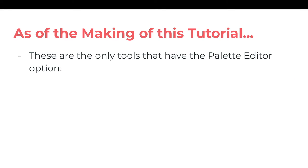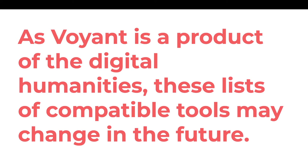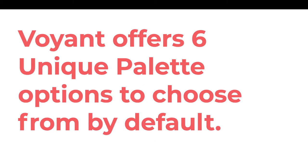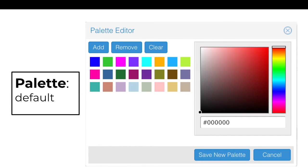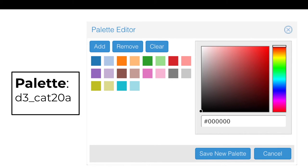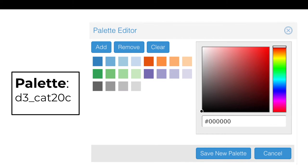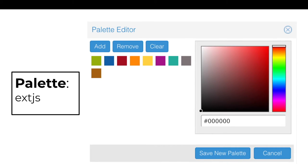As of the making of this tutorial, these are the only tools that have the palette editor option or are affected by it. As Voyant is a product of the digital humanities, these lists of compatible tools may change in the future. Voyant offers six unique palette options to choose from by default. Here they are: the default palette, D3-Cat10, D3-Cat20A, D3-Cat20B, D3-Cat20C, and ext.js.